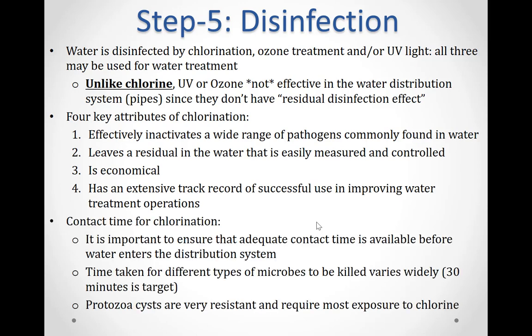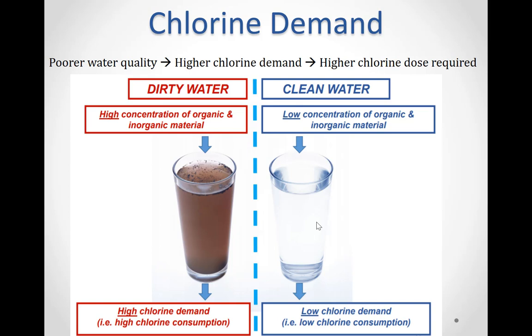It is very important to ensure adequate contact time for chlorination before water enters the distribution system. The time taken for different types of microbes to be killed or inactivated varies widely, and typically 30 minutes is the target. Protozoa cysts are very resistant and require the most exposure to chlorine. Dirty water contains high concentrations of organic and inorganic material, thus dirty water will have higher chlorine demand and require a higher chlorine dosage. Clean water, on the other hand, has low chlorine demand.